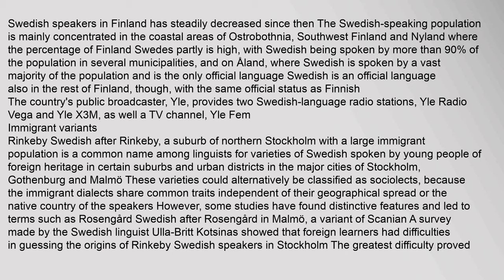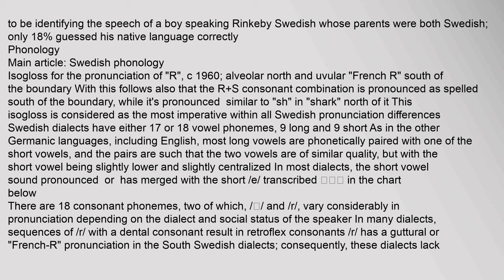Immigrant variants: Rinkeby Swedish — after Rinkeby, a suburb of northern Stockholm with a large immigrant population — is a common name among linguists for varieties of Swedish spoken by young people of foreign heritage in certain suburbs and urban districts in the major cities of Stockholm, Gothenburg and Malmö. These varieties could alternatively be classified as sociolects, because the immigrant dialects share common traits independent of their geographical spread or the native country of the speakers. Some studies have found distinctive features and led to terms such as Rosengård Swedish (after Rosengård in Malmö). A survey showed that foreign learners had difficulties guessing the origins of Rinkeby Swedish speakers, with only 18% correctly identifying a boy speaking Rinkeby Swedish whose parents were both Swedish.